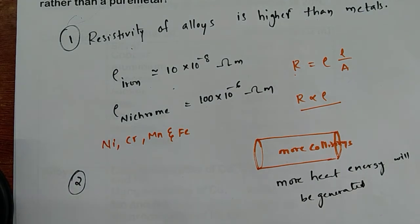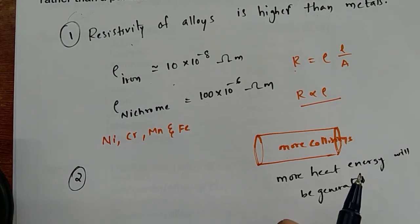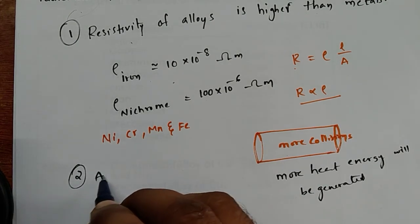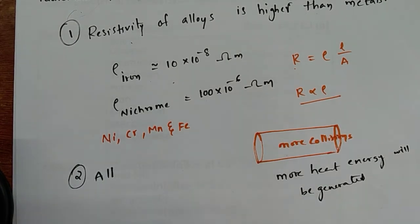The second reason is that alloys don't melt at huge temperatures. Metals can melt at low temperatures, but alloys won't - they have a high melting point.